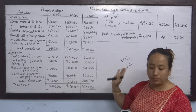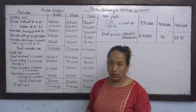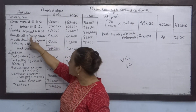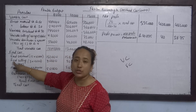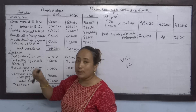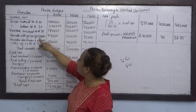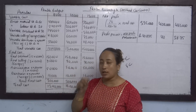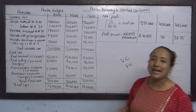Selling expenses are 15 rupees per unit. Of this, 40% is variable and 60% is fixed. So the variable portion is 6 rupees and the fixed portion is 9 rupees. We calculate: 6 into 8,000, 6 into 10,000, 6 into 12,000 for the variable part, and 9 into 10,000 for fixed.